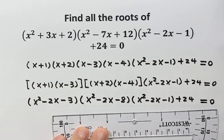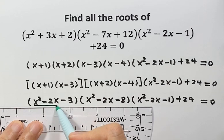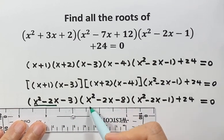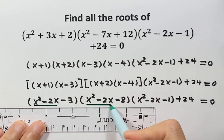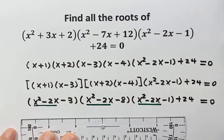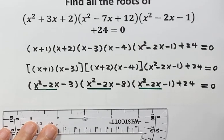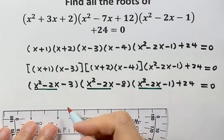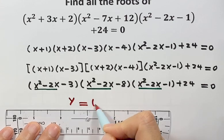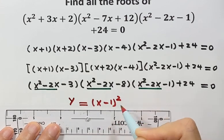You will notice there's something they have in common for these three factors: x squared minus 2x appears the same in each. That's why we are going to set up a new variable y.